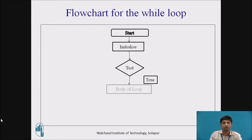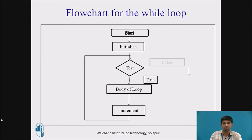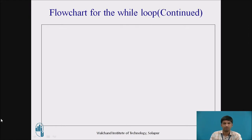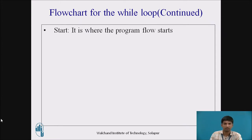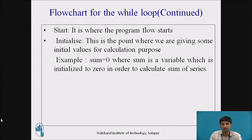This is the body of the loop, and next comes the increment operator — incrementing the value by one digit. The false phase leads to the stop phase. This is how the flowchart is written for the while loop. In the initialize phase, we give the initial values: sum equal to 0, where sum is a variable initialized to 0 in order to calculate the sum of the series.